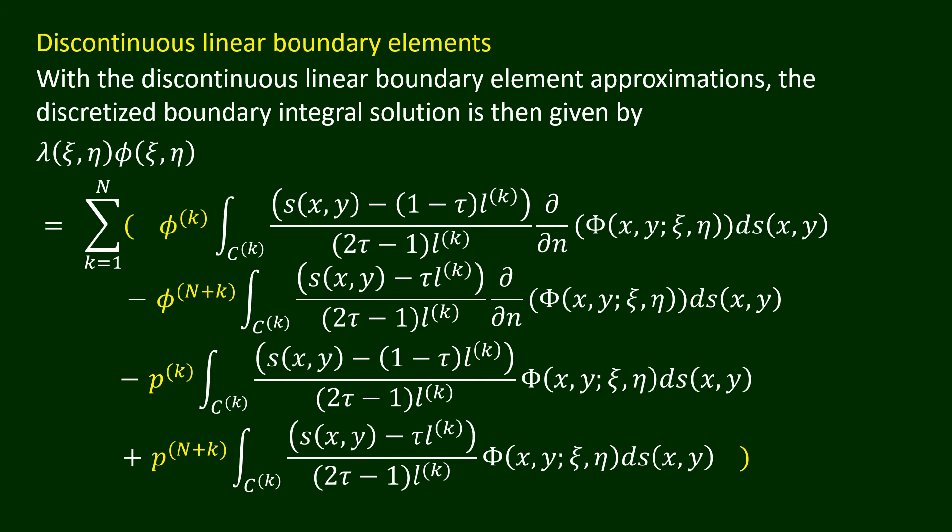If the values of phi and del phi over del n at the points (xi_k, eta_k) and (xi_{n+k}, eta_{n+k}), for k equals 1, 2, and so on until n, are known, we can use the discretized boundary integral solution to evaluate phi at any general point.